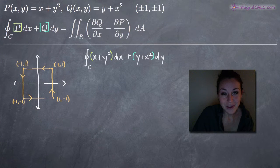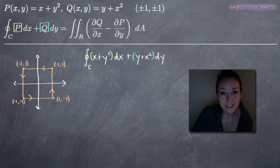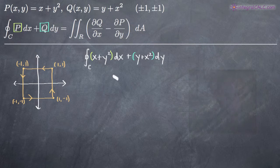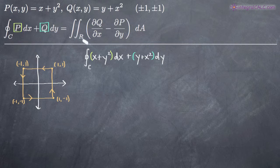Hi everyone! Welcome back to integralcalc.com. Today we're going to be talking about how to use Green's theorem. In this particular problem, we've been given two functions: P(x,y) equals x plus y squared, and Q(x,y) equals y plus x squared.